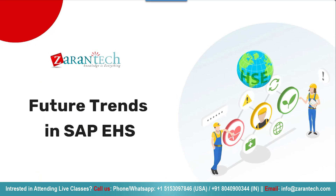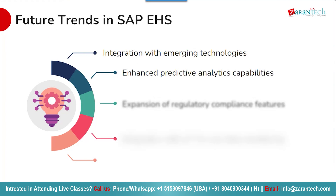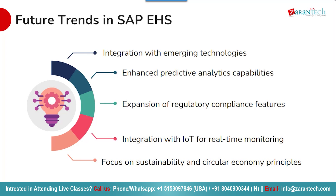Looking ahead at key future trends: one major trend is a growing focus on sustainability and incorporating circular economy principles into product and EHS management, with more synergies expected between SAP EHS activities and sustainability initiatives. From a technology perspective, SAP EHS will increasingly integrate with emerging technologies like IoT for real-time data collection from connected devices to enable EHS monitoring. We can also expect predictive analytics applied to EHS to become more sophisticated in identifying risks, and as regulations continue to evolve, SAP EHS will expand its regulatory content to help companies stay compliant.